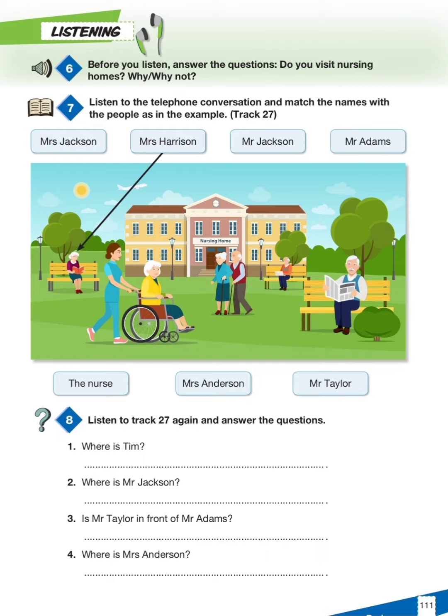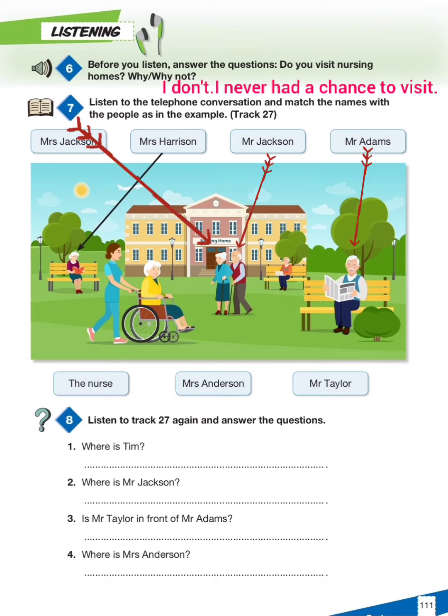Track 27, page 111. Exercise 7: listen to the telephone conversation and match the names with the people, as in the example. Hello! Hi Tim, it's Maria. Where are you? Hi Maria, I'm at the nursing home. Really? I missed our friends very much.